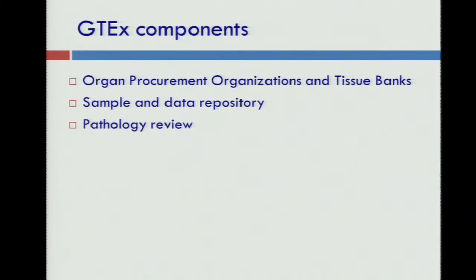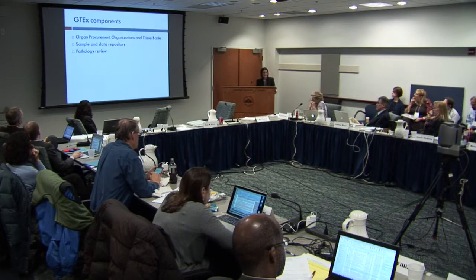GTEx is a very complex program with many moving parts. Organ donor enrollment is done through organ procurement organizations and tissue banks. We currently have two enrollment sites, a sample and data repository, and a highly engaged team of pathologists reviewing each sample. These activities are coordinated and managed by NCI through the CAHA hub initiative. We also have a brain bank where brains collected at source sites are received and further dissected.